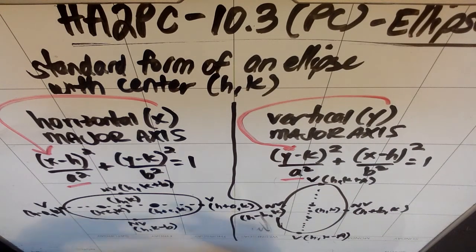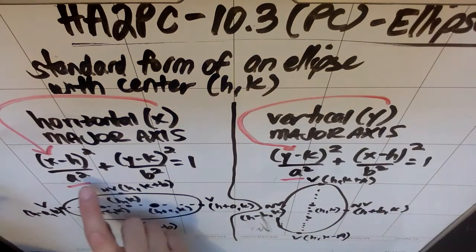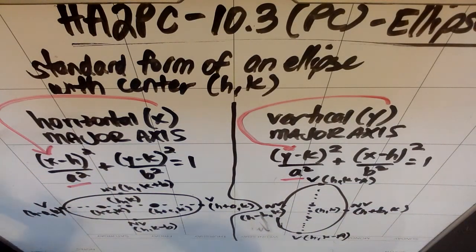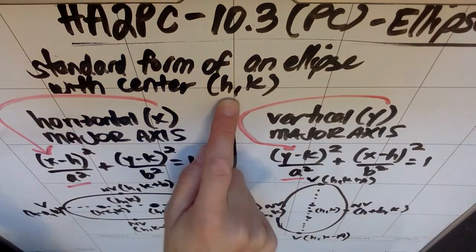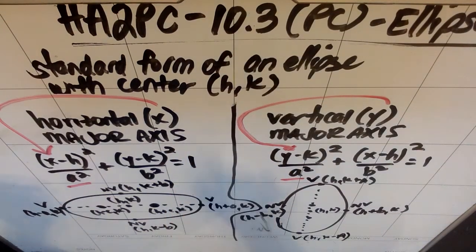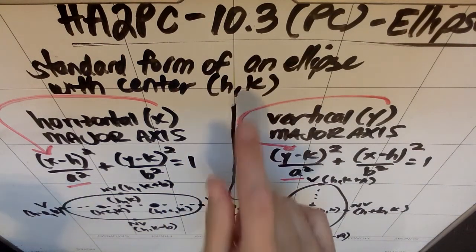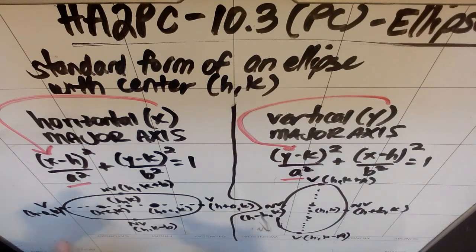When we look at this, in the equation keep in mind a couple things. One, x always goes with h because h is the x coordinate of the center, and y always goes with k because k is the y coordinate.